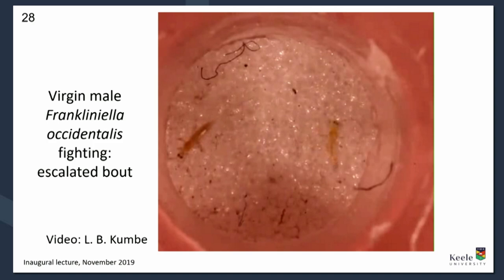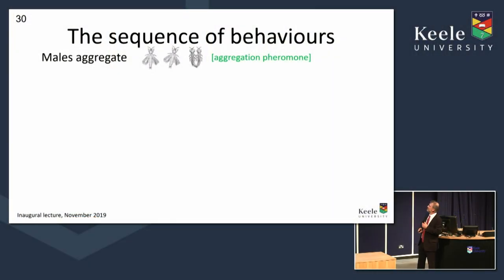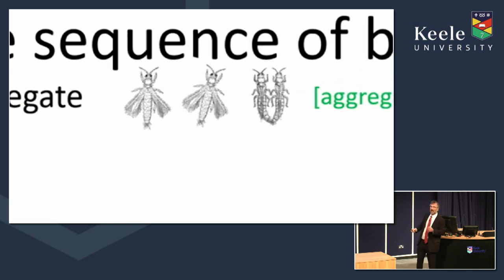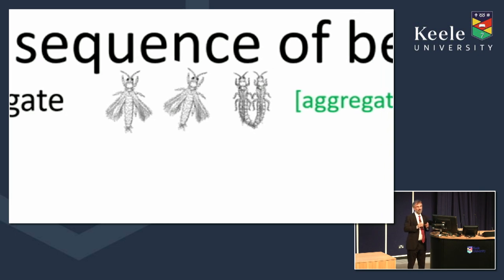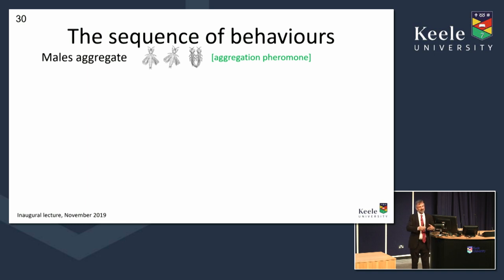You've seen this rather rare escalated bout of males fighting, which is part of what goes on in the aggregation behaviour as part of mating. So let's come on to mating. You've seen the aggregation, but what happens when the female lands and a male approaches? The first stage is males aggregating. The males produce an aggregation pheromone — we discovered the first one here at Keele in about 2001, the first one in any thrips, in a species called the western flower thrips. This pheromone is produced by males and attracts both males and females.